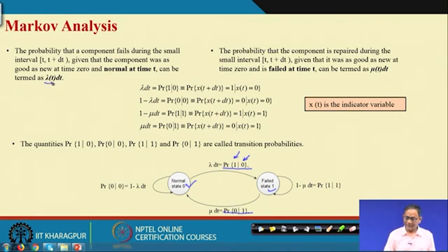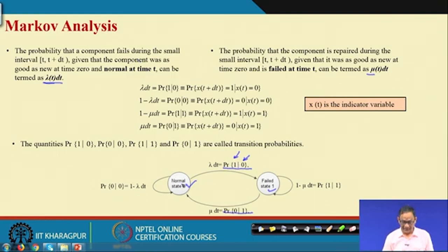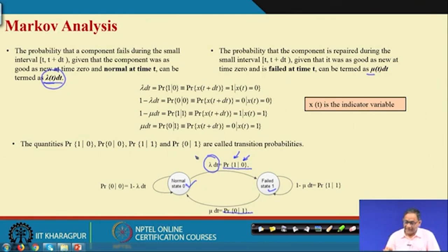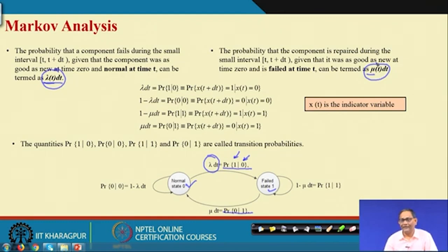You know what lambda(t) and mu(t) are. For a very small interval of time delta t, lambda(t)·dt is the probability that the component fails during a small interval (t, t+dt). If the component is at working state at time t, the probability it will fail at t+delta t is lambda(t)·dt. Similarly, if the component is at failed state, mu(t)·dt is the probability that the component will be repaired during that small interval.